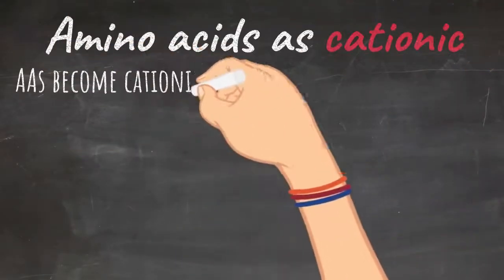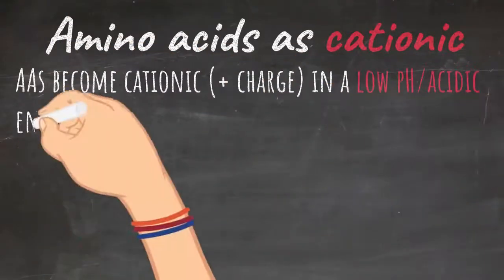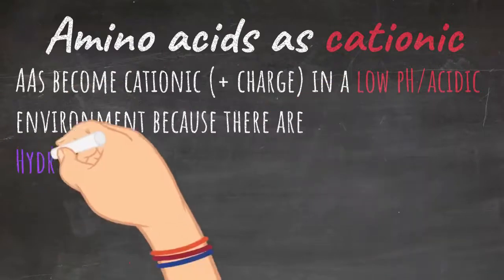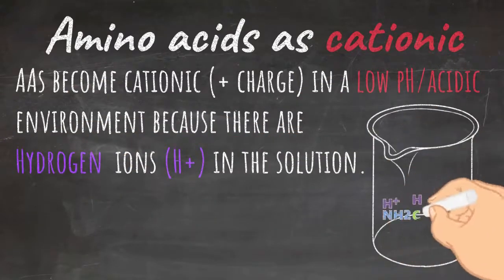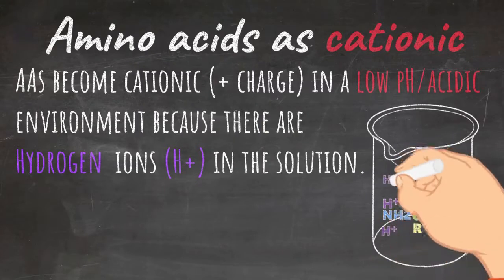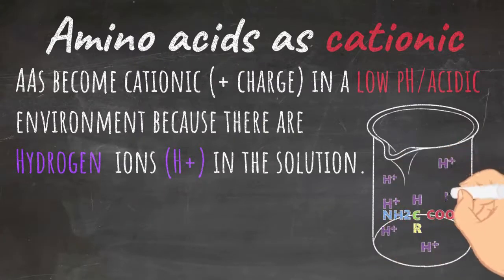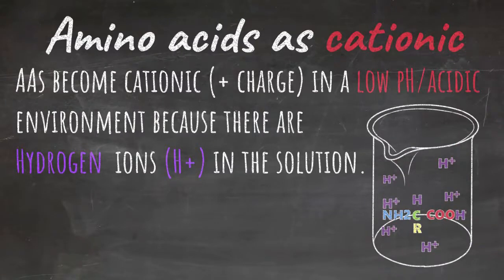Amino acids as cationic. Amino acids become cationic with a positive charge in a low pH or acidic environment. This happens because there are hydrogen ions in the solution. As you can see on the right, there is just a general amino acid structure and lots of hydrogen ions floating around in the solution.